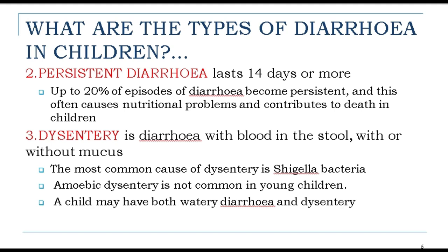The third type is dysentery — diarrhea with blood in the stool, with or without mucus. The most common cause of dysentery is Shigella bacteria. Amoebic dysentery is not common in young children, and a child may have both watery diarrhea and dysentery.